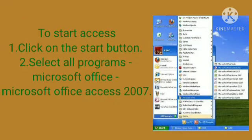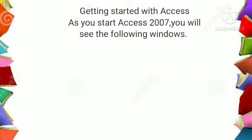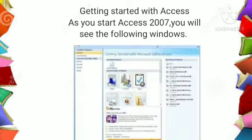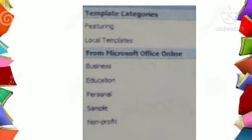Different places like hotels, offices, and railway stations are some examples where databases play an important role. To start Access, click on the Start button, then select All Programs, then select Microsoft Office, and then Microsoft Office Access 2007. As you start Access 2007, you will see the following window. The left pane of the window displays the template categories. These templates are pre-built databases designed to perform a specific task that you can start to use immediately.